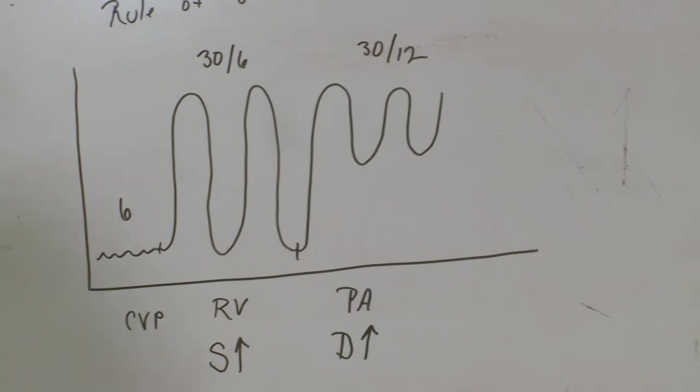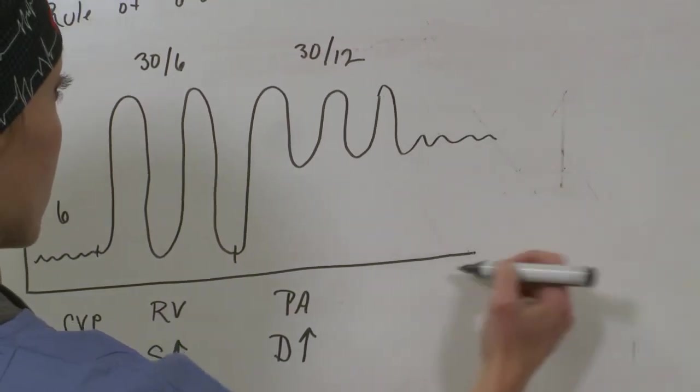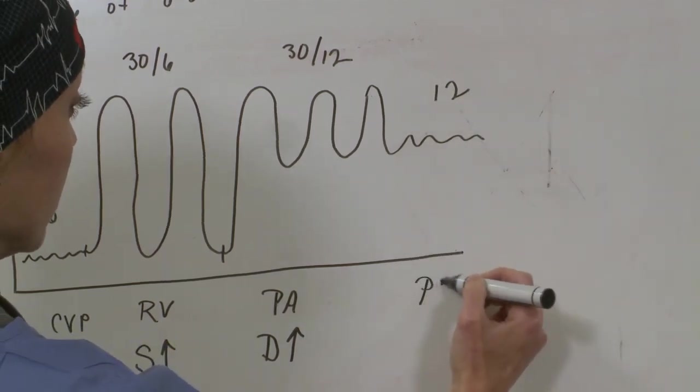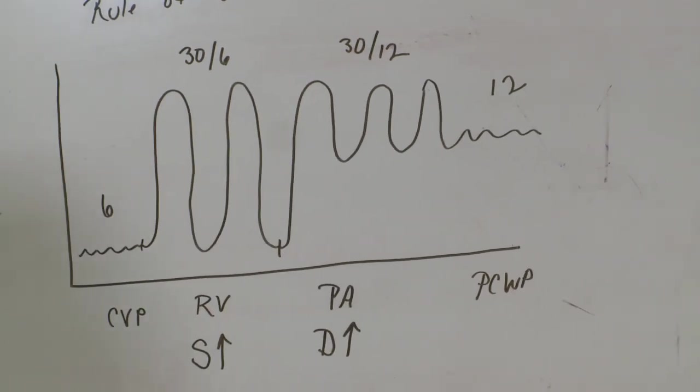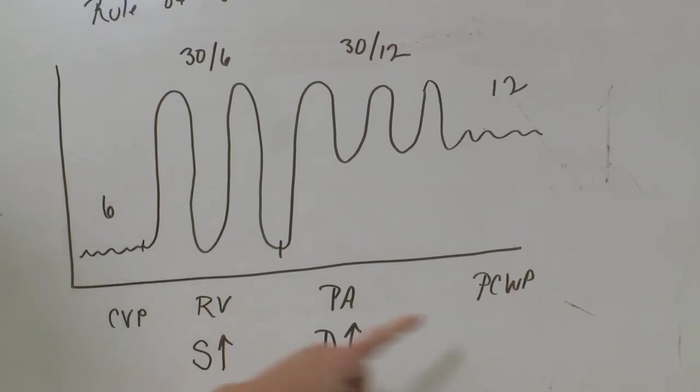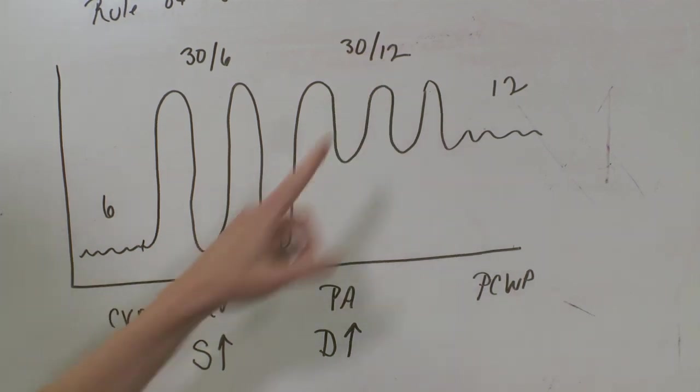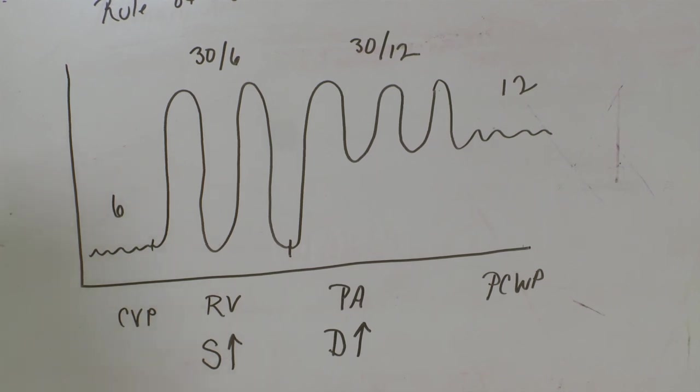Then if you wanted to wedge it, there it would flatten out, and that would be your wedge at 12. And if you don't want to wedge your swan, which most of us don't, your wedge is usually just your bottom diastolic number there. So I hope this helps you understand a little bit better the swan as you're placing it and floating it. And keep in mind that these are normal PA pressures, not ones on patients with pulmonary hypertension.